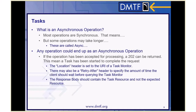So as a client, any time you see a 202, it could be on a GET, particularly if you do an EXPAND; it could be on a POST; it could be on a PATCH. Any time you see a 202, this means a task has been started. When you get a 202, the location header — the HTTP header called location — has a URI of this thing called a task monitor. There may also be a retry-after header to specify the amount of time you should wait before doing a GET on the task monitor.